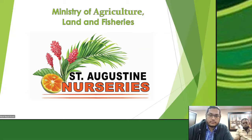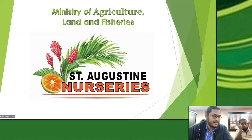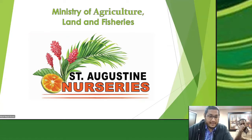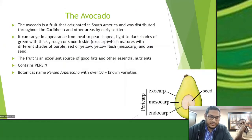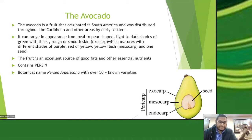The avocado is a fruit that was discovered in South America and was distributed throughout the Caribbean region and to other areas by early settlers moving up and down. It is a pear-shaped fruit and the skin, which is the exocarp, can vary in different shades of green — light or dark. According to the variety, the skin would also be smooth or rough. When it ripens and matures, it could change to different shades of yellow, purple, or even red.